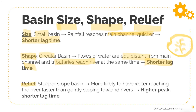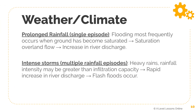Relief refers to the steepness of the slope in the basin. If the river is on a steep slope, water will reach the river much faster than in gently sloping lowland rivers. Water will rush down much faster on a steep slope, resulting in a higher peak discharge as well as a shorter lag time. This is fairly self-explanatory.